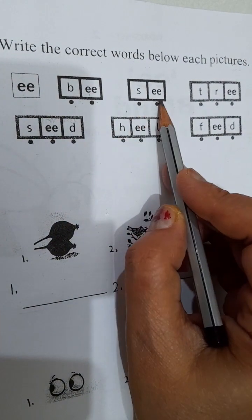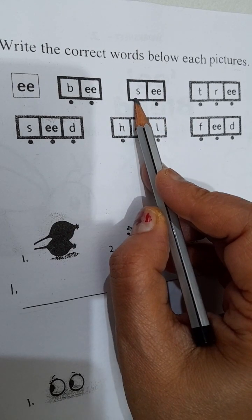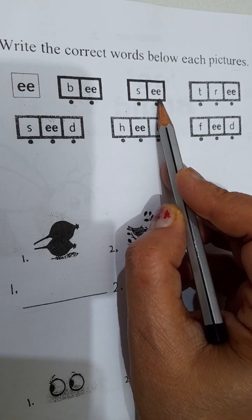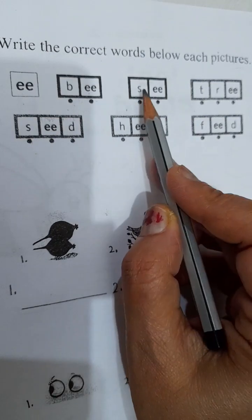S, E, E, D. The letter S makes the sound S. S, E, E, D. Seed. Bee, see.